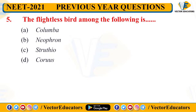Which bird in these four is flightless — meaning it is a bird but cannot fly? Columba is pigeon, which can fly. Neophron is a type of vulture found in America. Struthio is ostrich. Corvus is a type of crow, also found in America as American crow.